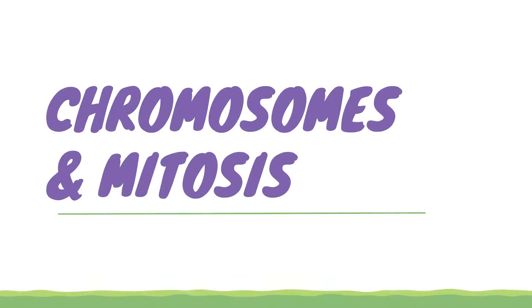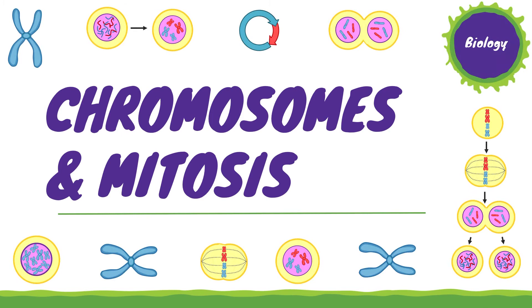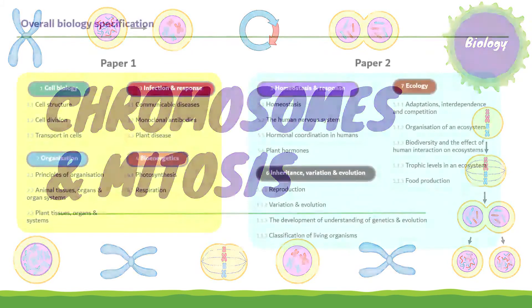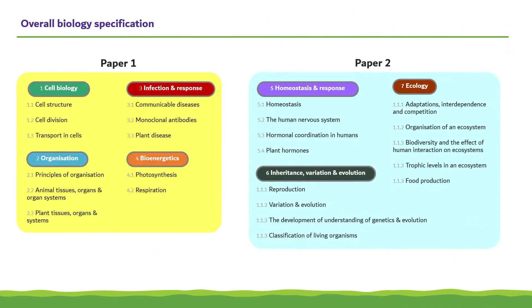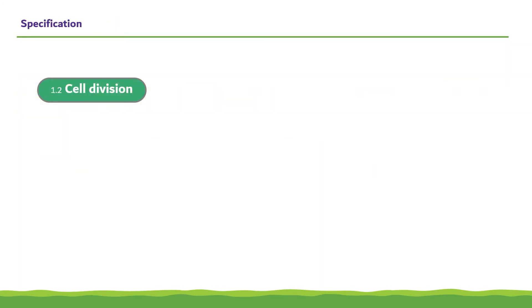Hi, and welcome to this video on Chromosomes and Mitosis, content within the AQA GCSE Biology Specification. The learning objectives for this content are contained within the subtopic Cell Division, which is contained within Topic 1, Cell Biology, which is tested in Paper 1. Within the subtopic of Cell Division, the areas this video will cover are Chromosomes and Mitosis in the Cell Cycle.